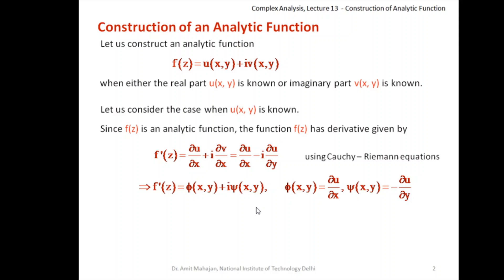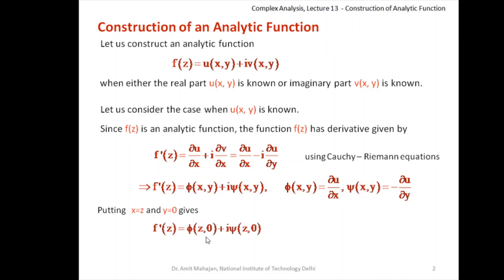If the derivative exists and the function is analytic, then by the definition of derivative it must be unique — the derivative must be the same for every path used. So we can use the path along the real axis and substitute x = z and y = 0. This is what was given by Milne and Thompson, so we call this the Milne-Thompson method. Substituting y = 0 and x = z, f'(z) can be written as φ(z, 0) + i·ψ(z, 0), and the right-hand side becomes a function of z alone.